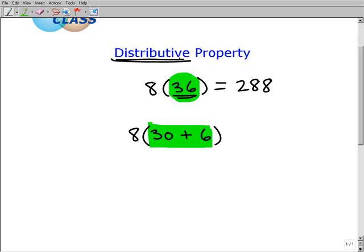If you think of this word distribute or distributive, you can kind of think of the word distribution, which kind of means like pass out to multiple things. That's basically what we're going to do. We're going to take this 8, and we're going to distribute it to both the 30 and to the 6.